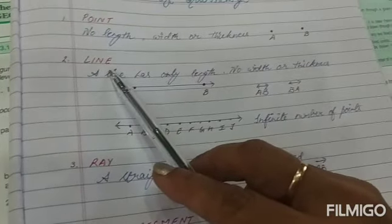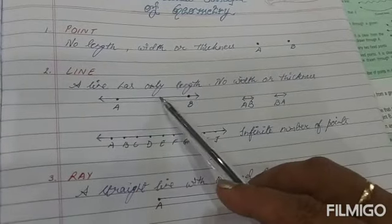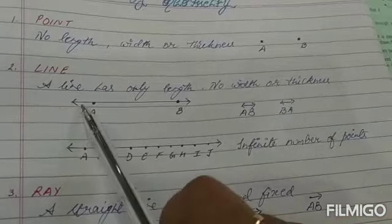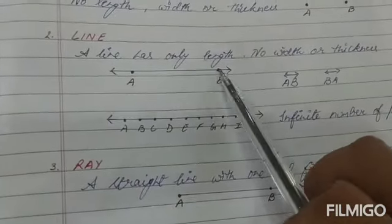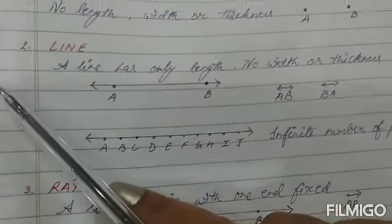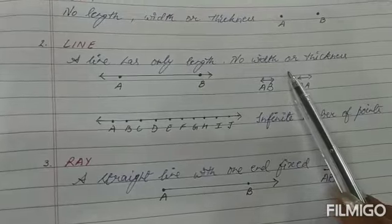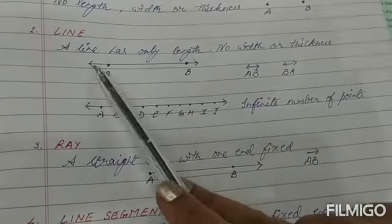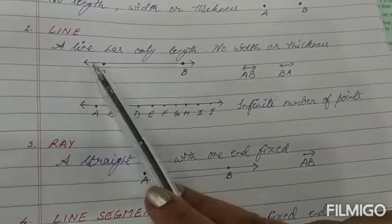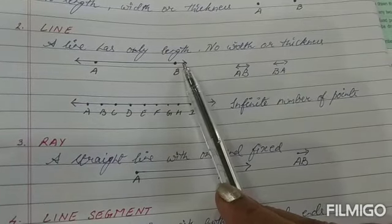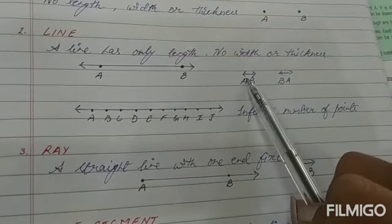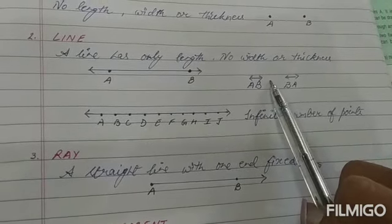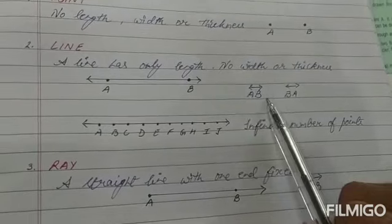The next term is a line. A line has only length — no width, no thickness. As you can see, I have drawn a line and on both ends I have made arrows. This arrowhead means the line can be extended infinitely in either direction. Any straight line that touches two points and crosses them is termed a line. We represent it as line AB, writing AB with a small line and arrows in both directions. We can also call it line BA — either direction makes no difference.